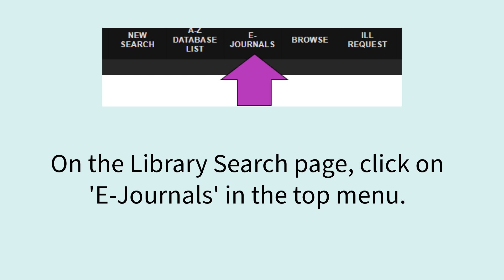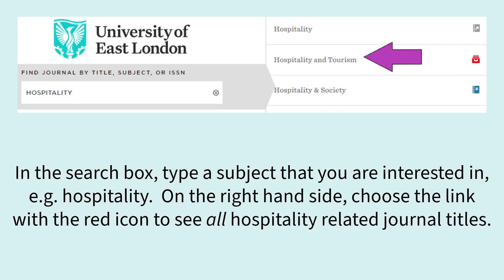Alternatively, on the Library Search page, click on E-Journals in the top menu. In the search box, type a subject that you are interested in, for example, Hospitality. On the right-hand side, choose the link with the red icon to see all hospitality-related journal titles.